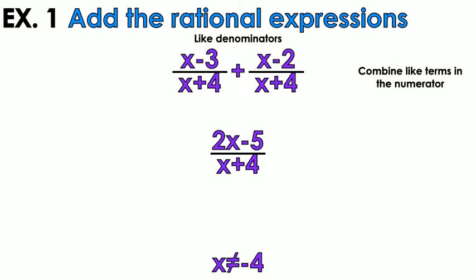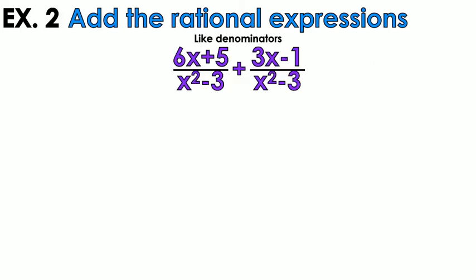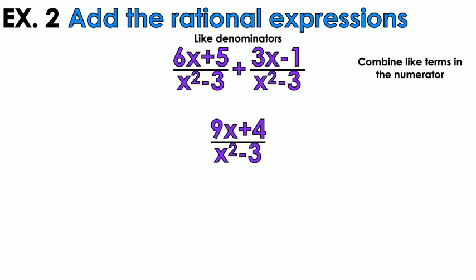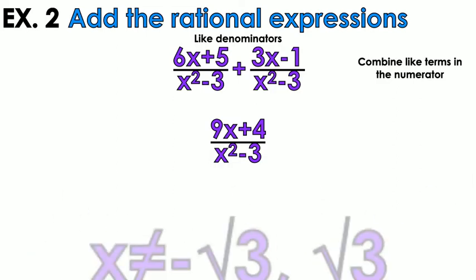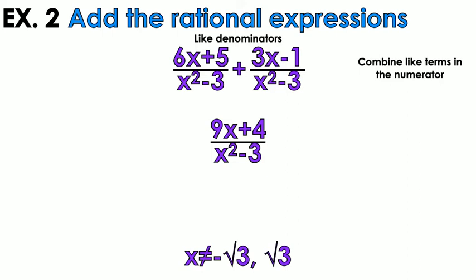Again, like denominators — combine your like terms. 6 plus 3 is 9 and 5 plus negative 1 is 4, so you get 9x plus 4 in the numerator. Leave the denominator alone. Then define your domain: x cannot equal negative square root 3 and square root 3.